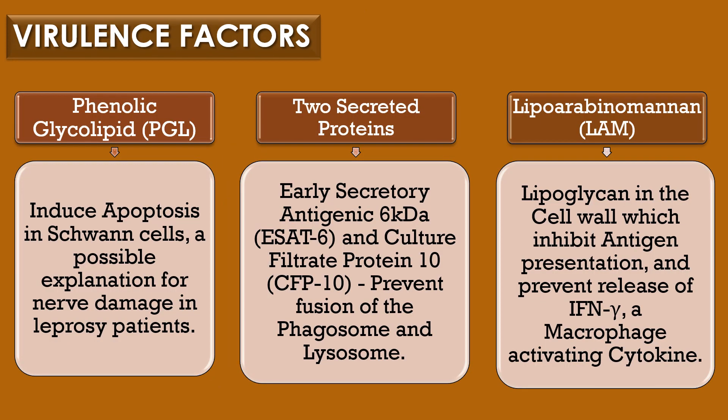Virulence factors of Mycobacterium leprae. Virulence is the ability of the microorganism to cause an infection or disease. There are three virulence factors responsible for causing Mycobacterium leprae infection or leprosy. They are phenolic glycolipids, two secreted proteins, and lipoarabinomannan. The first virulence factor is phenolic glycolipid, which induces apoptosis in Schwann cells, a possible explanation for nerve damage in leprosy patients.